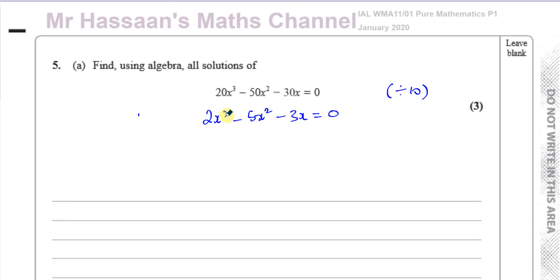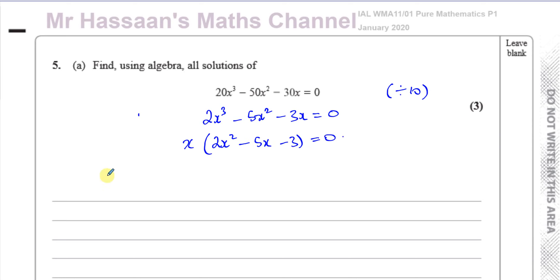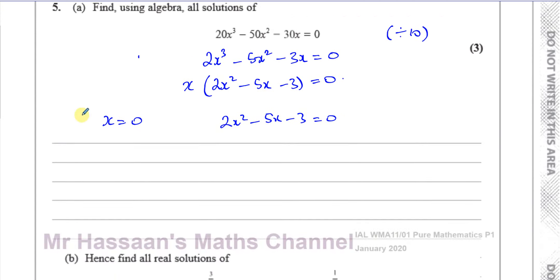So we've got 2x³ − 5x² − 3x = 0. Now I can take out the common factor, which is x, which leaves me with a quadratic inside the bracket: 2x² − 5x − 3 = 0. So I know that either x = 0, or 2x² − 5x − 3 = 0, which I can factorize further and solve.